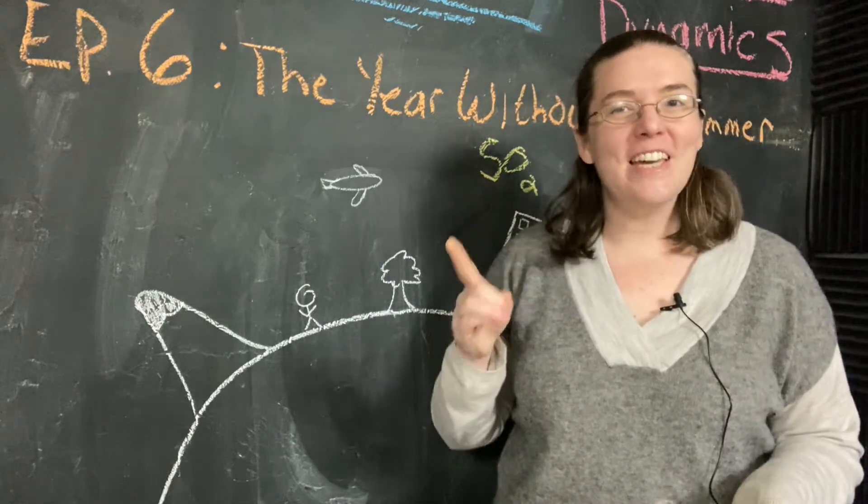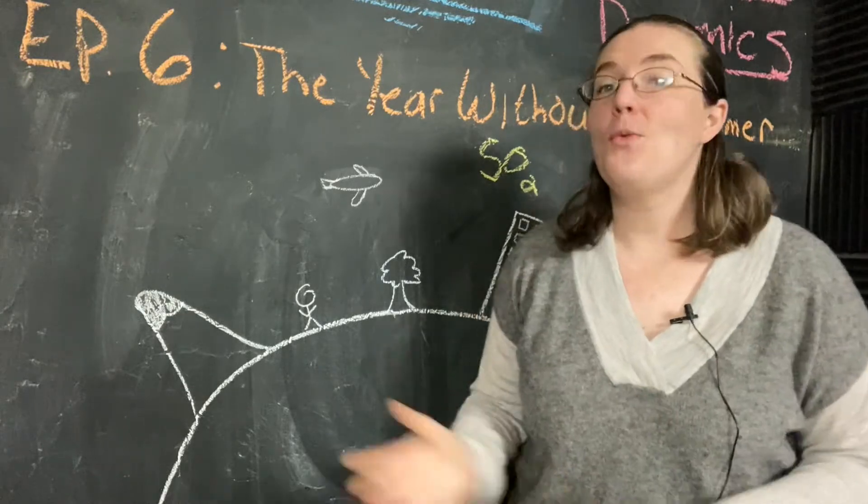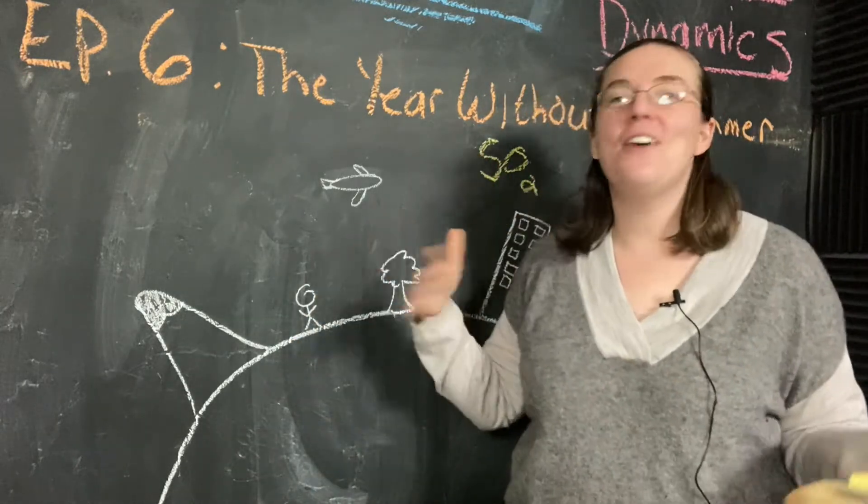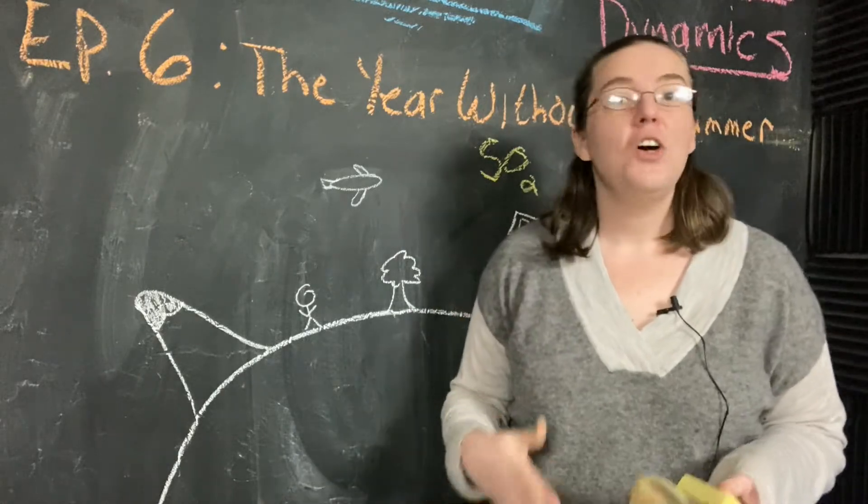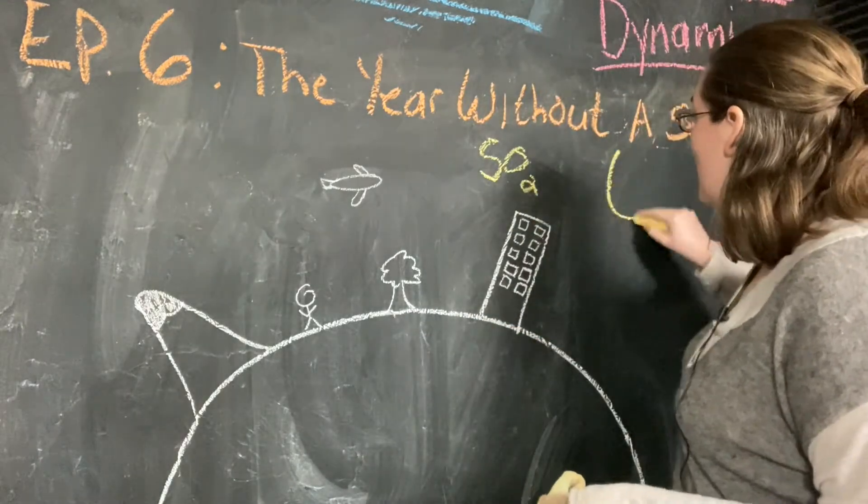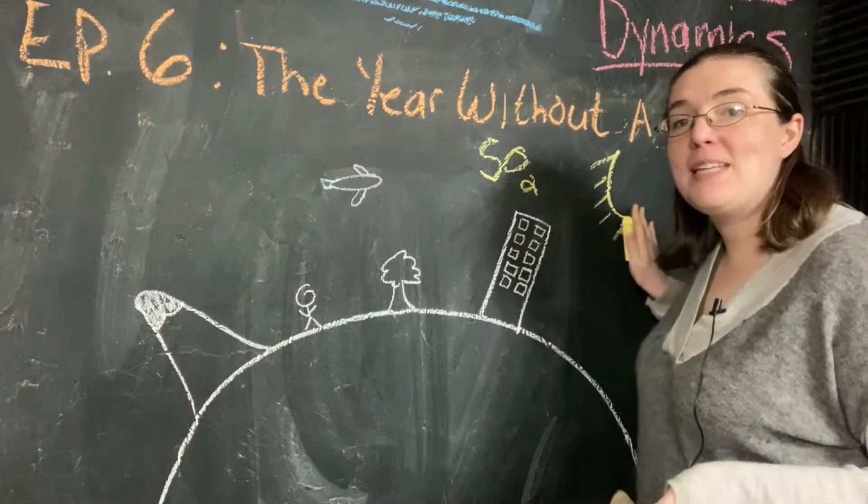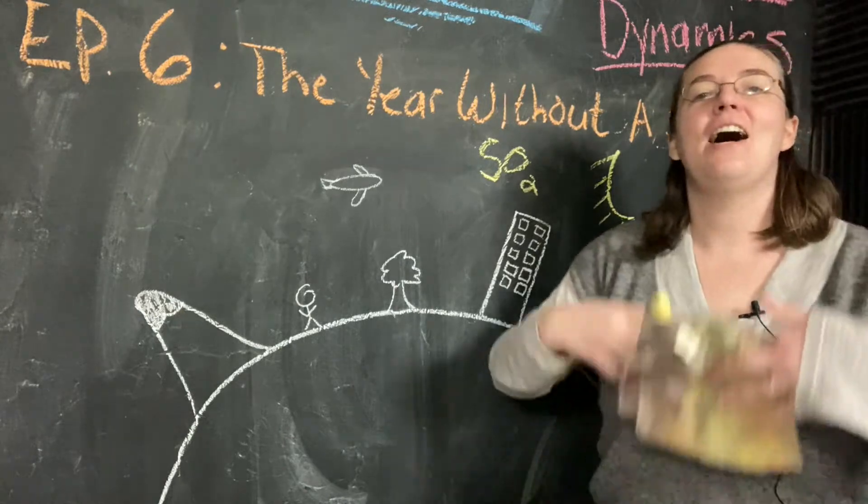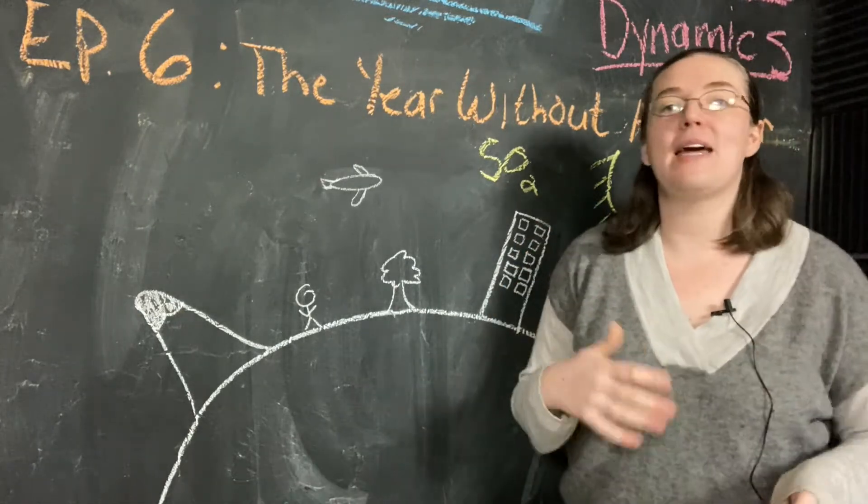First, our sulfur dioxide is shiny. Way back in the first video in our climate dynamics series, when we did black body radiation, we learned about the incoming energy from the sun, about how much energy comes in from the sun and hits Earth, and how that's a very important factor for climate.